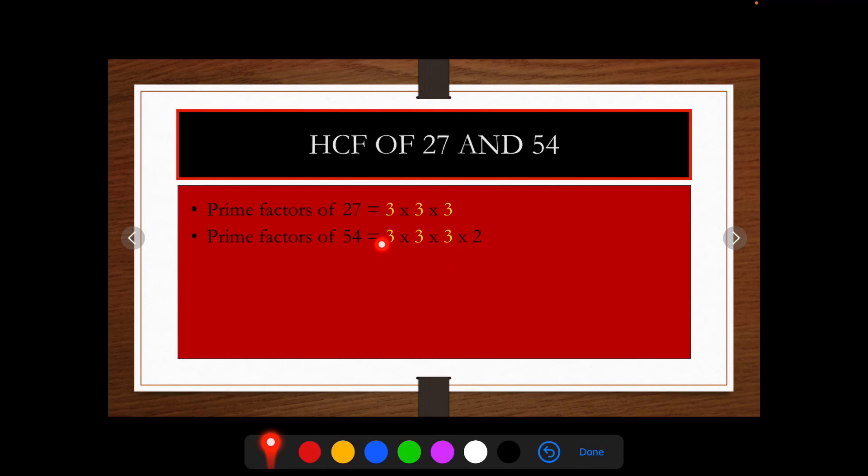Now, find the common factor. Here, 3 and 3 is a common factor. Again, this 3 and 3 is a common factor. And third time also, 3 and 3 is a common factor. Now, write all the common factors. So, we get 3, 3 and 3.